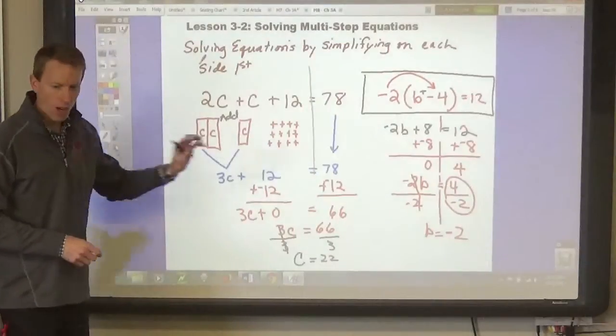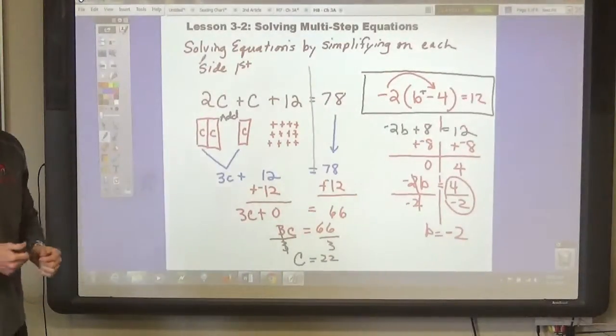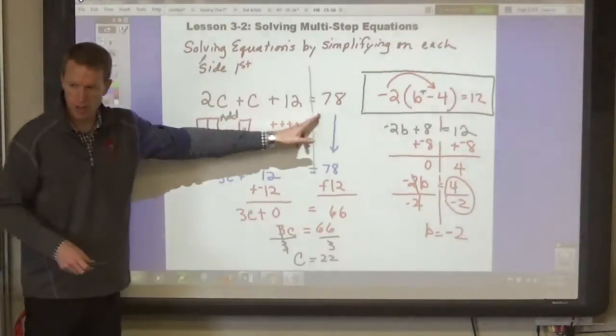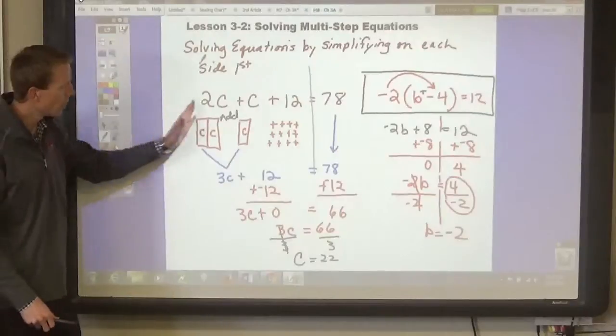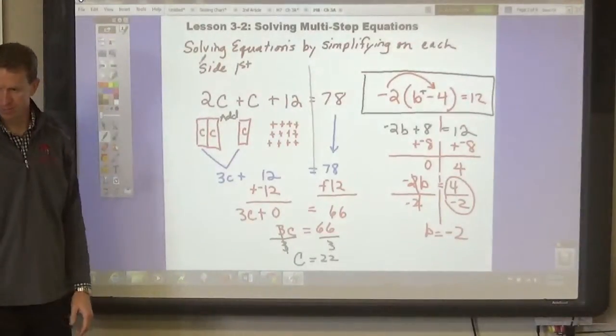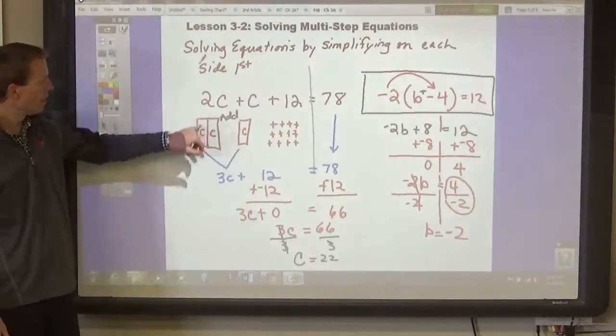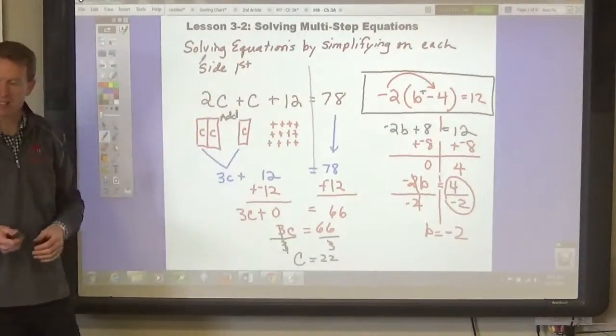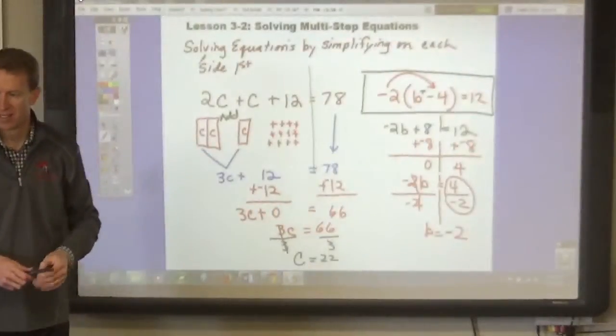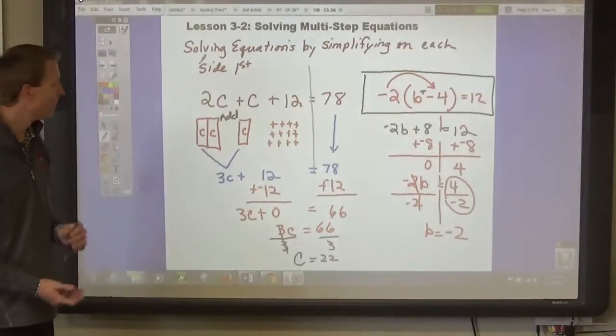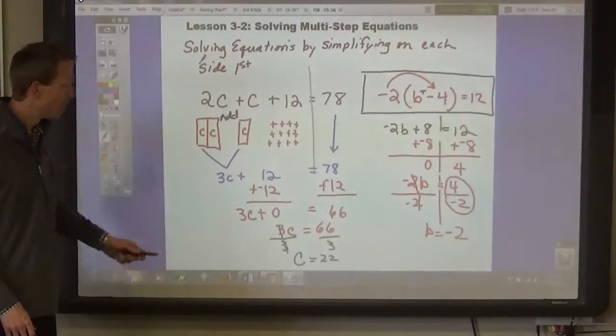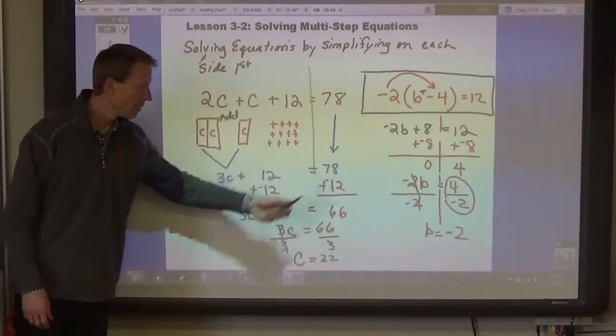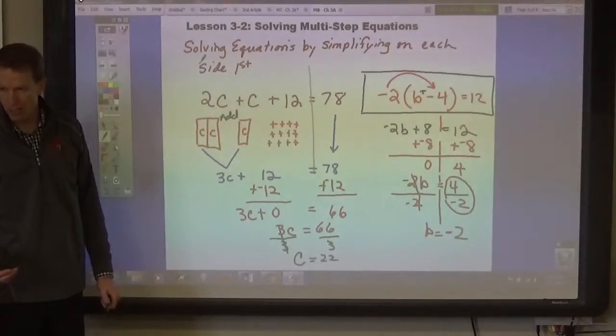What you'll be doing is simplifying on each side before you start solving, before you start trying to get the variable by itself. So, you know how to do this. We've talked about adding like terms before. Look at this one: 2c plus c plus 12. And if you look at just this side, you can simplify that, can't you?